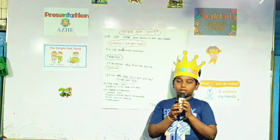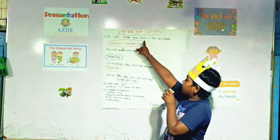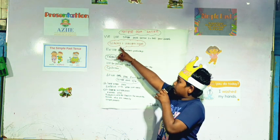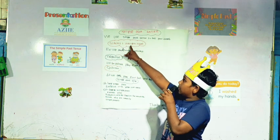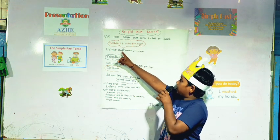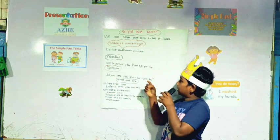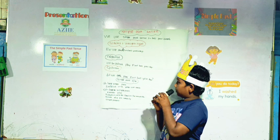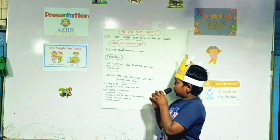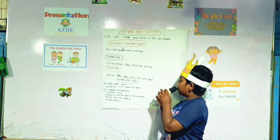Good evening everybody. My name is Vijan. Simple past tense — we use simple past tense to tell past events. Structure: subject plus verb plus did past. Example: We played football yesterday. We did not play football yesterday. Question form: Did we play football yesterday?